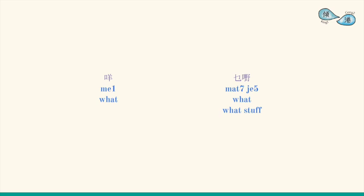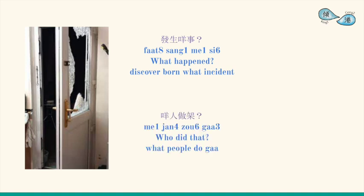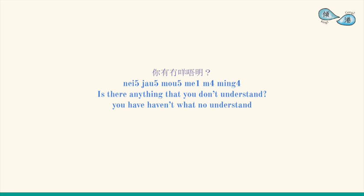什麼事 means 'what'. For example: 發生什麼事? (What happened?) 什麼人做家? (Who is home?) It can also be used in conjunction with a yes-no question: 你有沒有什麼不明白? (Is there anything you don't understand?)